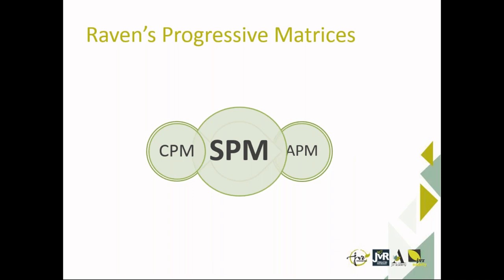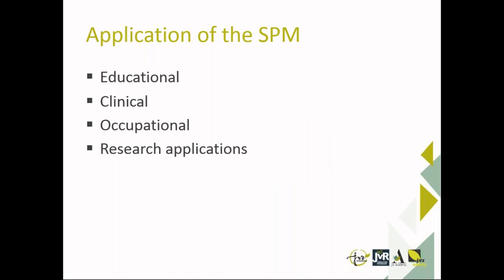The Colour Progressive Matrices are used generally with young children, ages approximately five to twelve, or with older people, those with special needs, intellectual impairment, or in clinical settings. The Advanced Progressive Matrices are often used in managerial selection and research on cognitive processes. For this webinar, we focus on the Standard Progressive Matrices and specifically its application to adolescents.